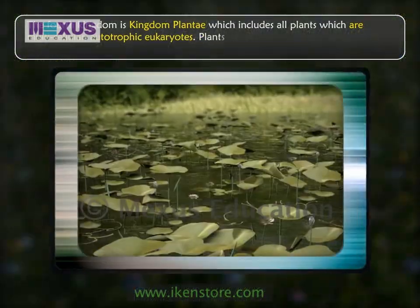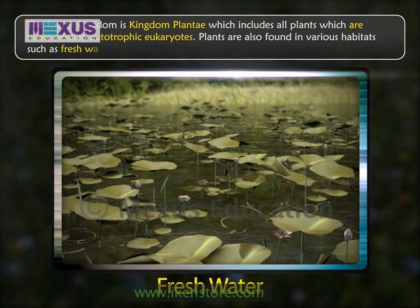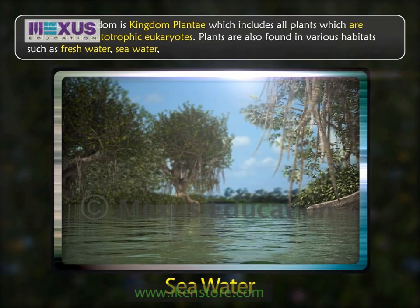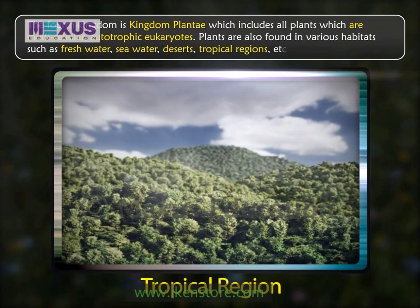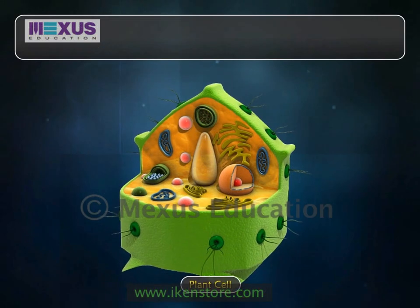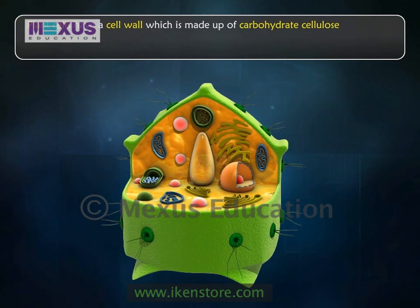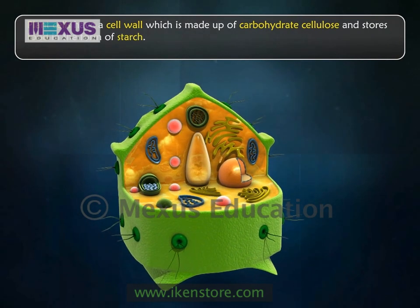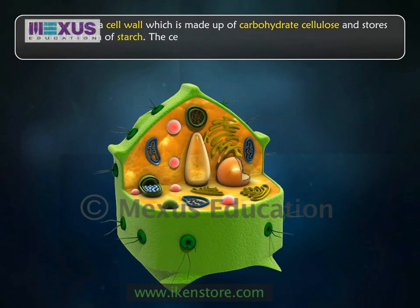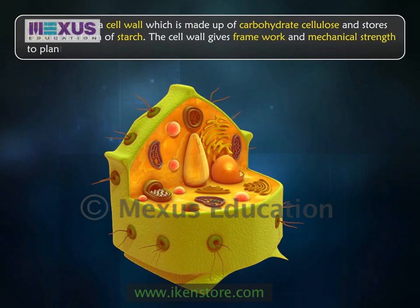Plants are also found in various habitats such as fresh water, sea water, deserts, tropical regions, etc. Plant cells have a cell wall which is made up of carbohydrate cellulose and stores food in the form of starch. The cell wall gives framework and mechanical strength to plant cells.